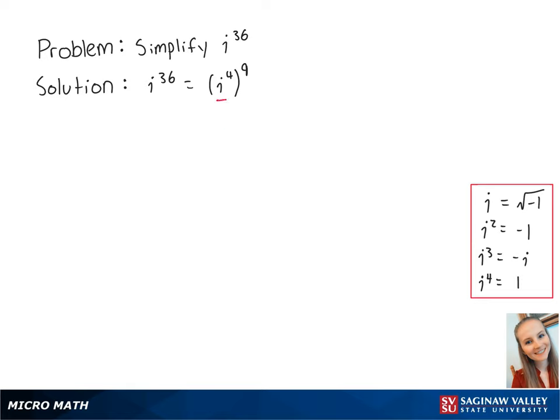Since i to the 4th power is equal to 1, we can write this as 1 to the 9th power, which is equal to 1. This is the final answer.